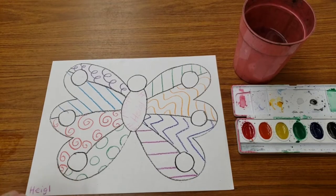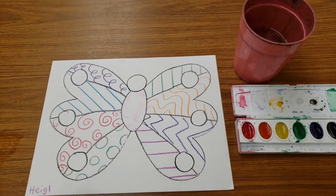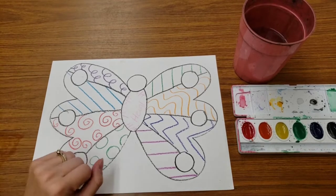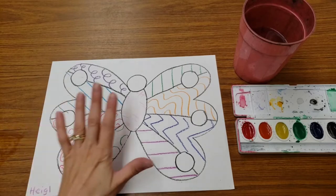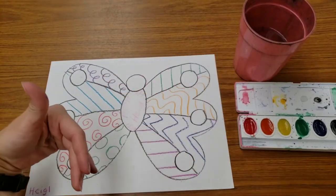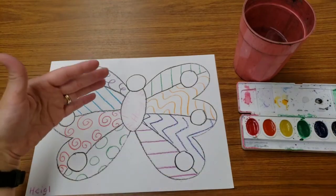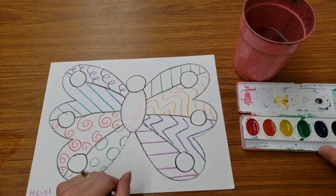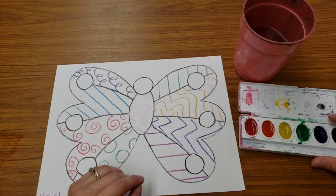Now that we're done drawing lines on your butterfly, we're going to paint the butterfly. What we're doing is called a resist. The crayon is made of wax. This is watercolor. Wax and water are not friends, so the wax will resist the water and it won't stick to it.